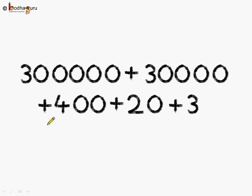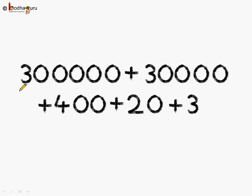Next, let's change this big number to standard form. What is this number? Let's start counting: ones, tens, hundreds, thousands, ten-thousands, and lakhs place. So we have 3 lakhs plus — let's count the zeros.